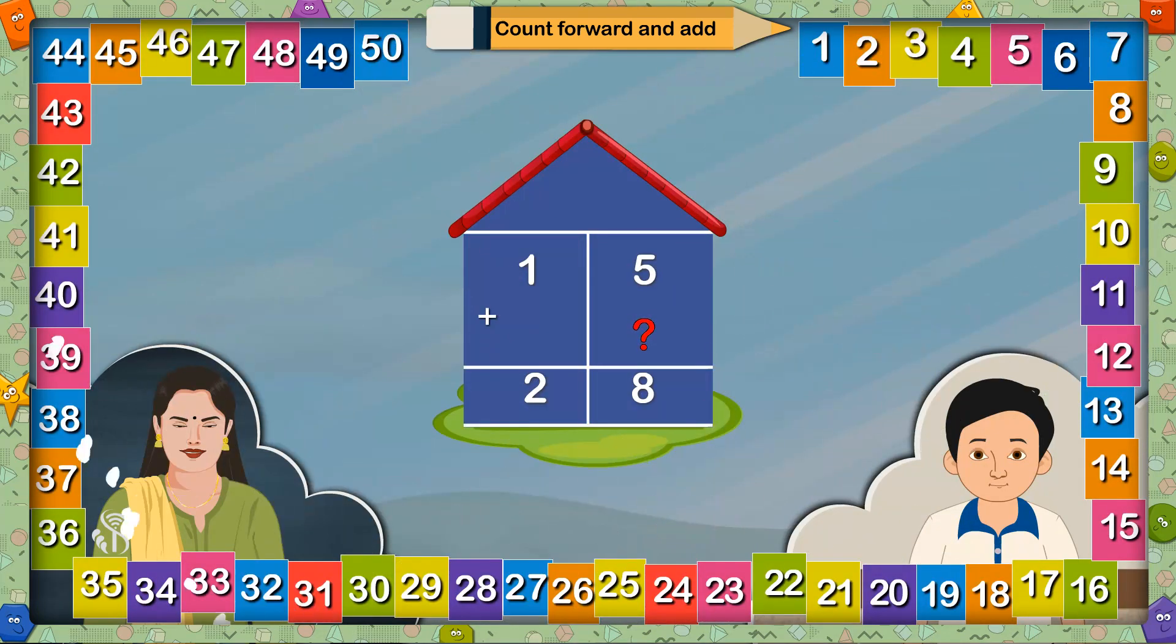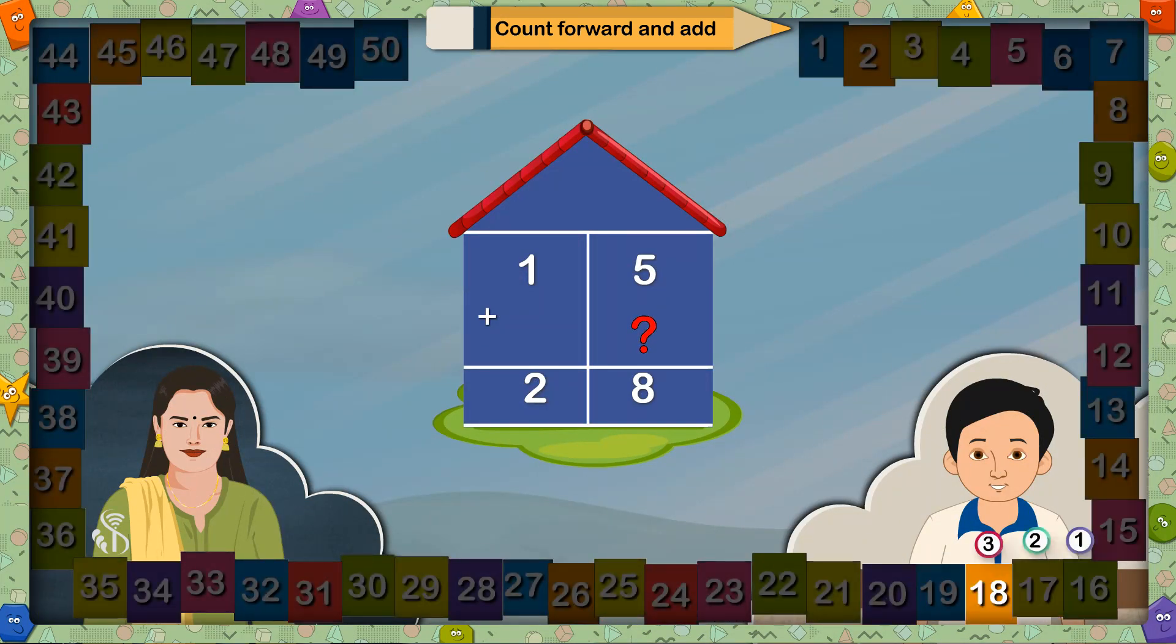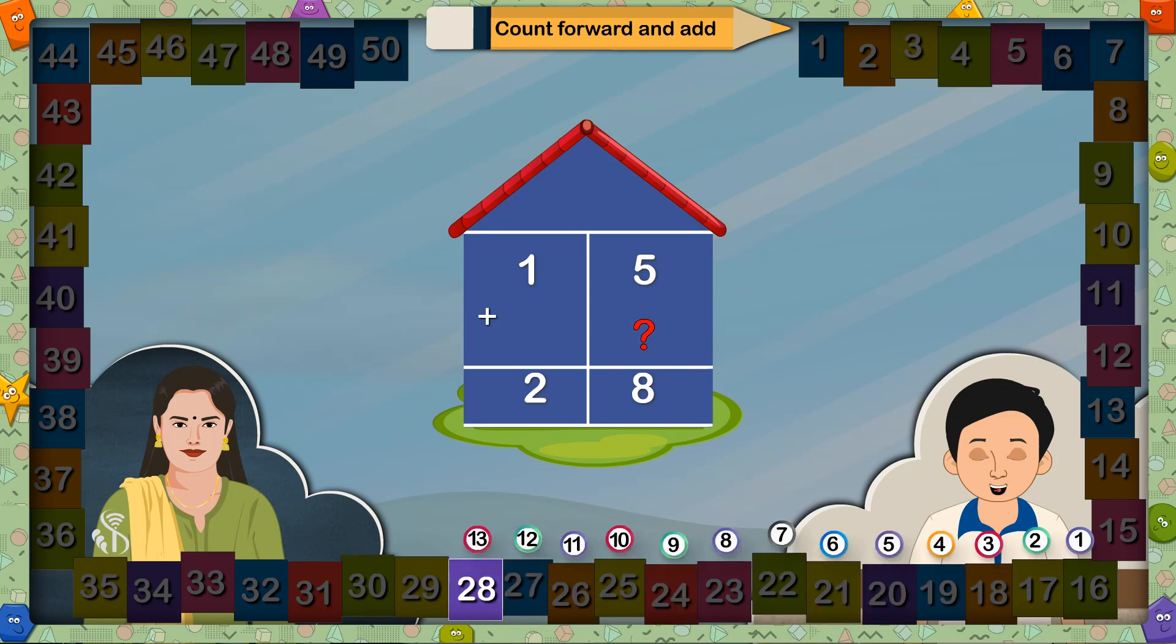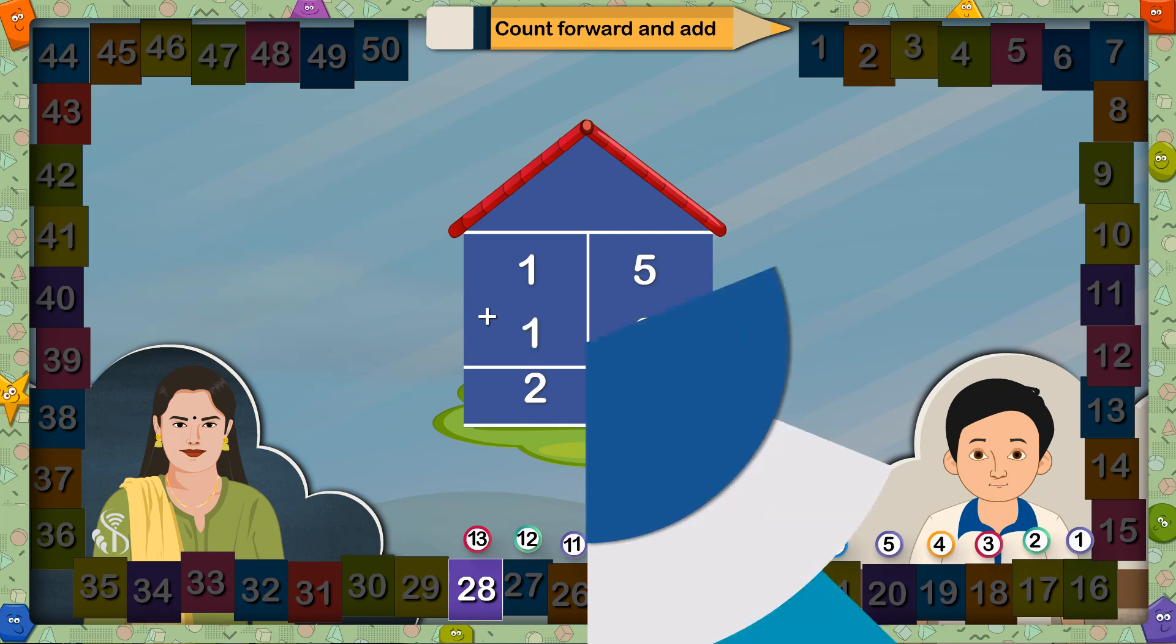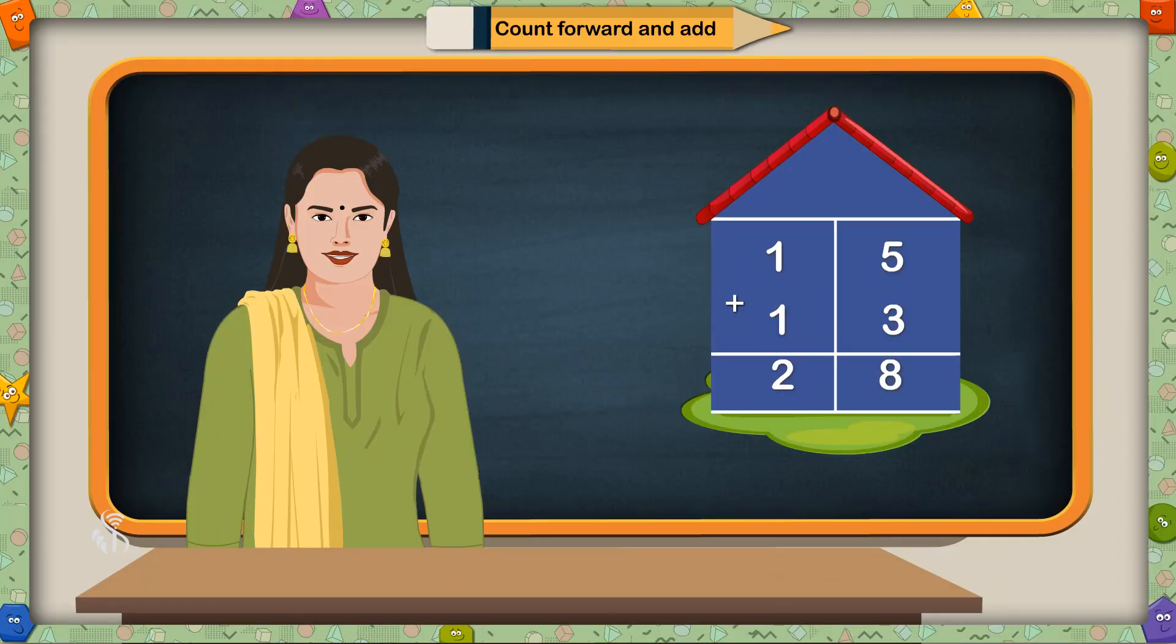Which number should be added to 15 so the answer will be 28? Madam, from 15 onwards I counted 13 places to reach 28, so the number must be 13. Correct.